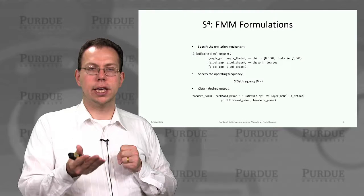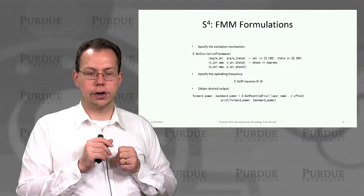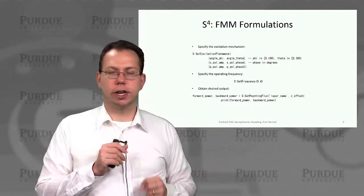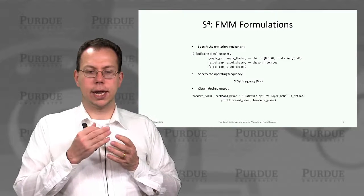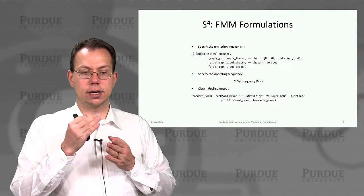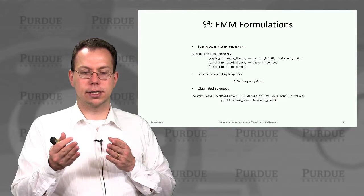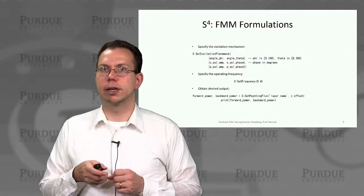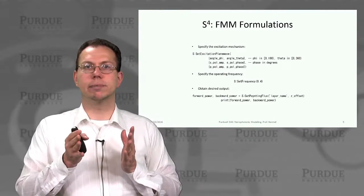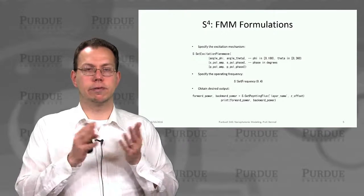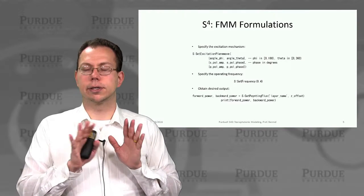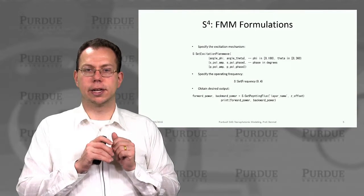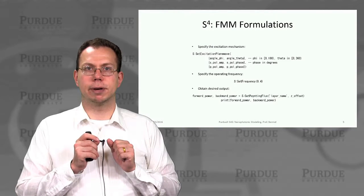Once you have all those key inputs, you can actually do a calculation. In this case, you use the S get pointing flux function, taking a specific layer and a z offset position to get the forward and backward power, then print it out. That's a simple run through of how you calculate output for a one-layer structure — just a proof of concept. For more complex structures, we'll talk about that in more detail next time.